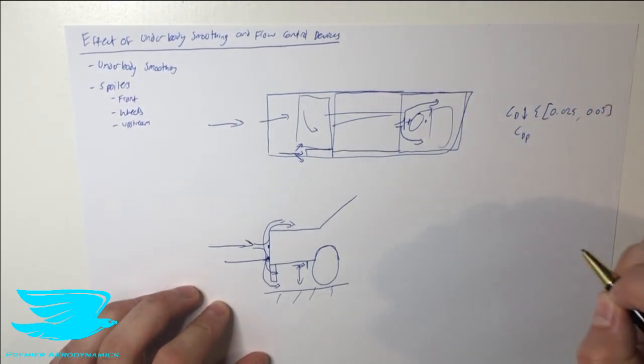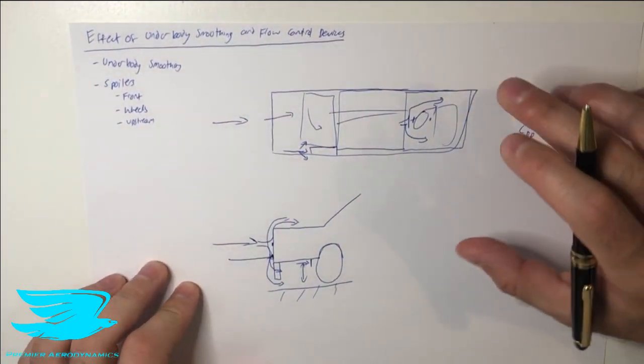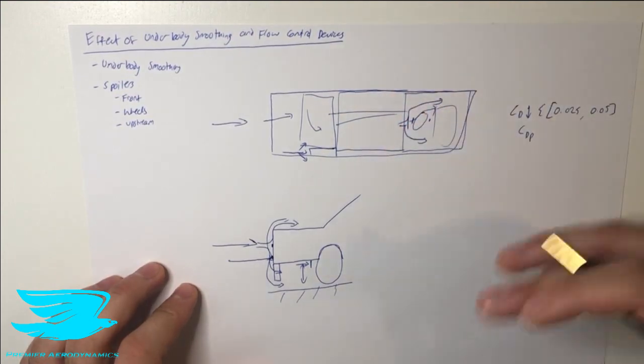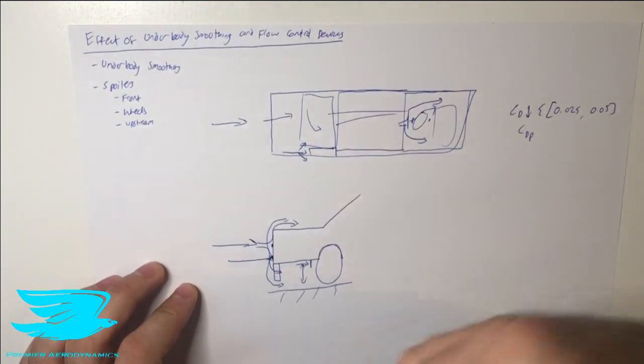If you don't know what reduced pressure drag is, or pressure drag in general, check out our Aero Fundamentals video on that, which I'll link in this card here. So that is the underbody of a car and how smoothing it affects the drag and different flow control devices. Let's quickly go through it again, just to recap.